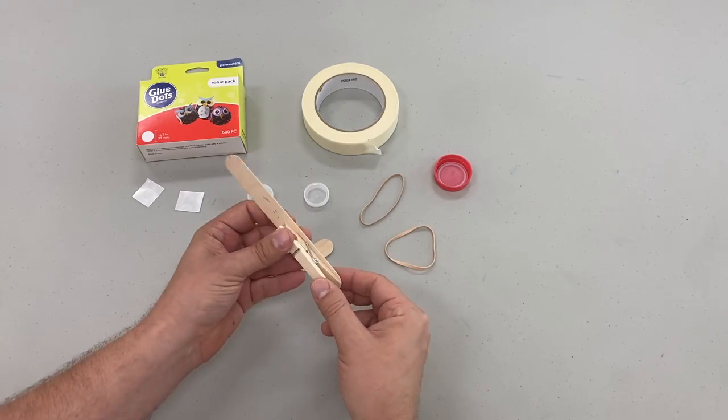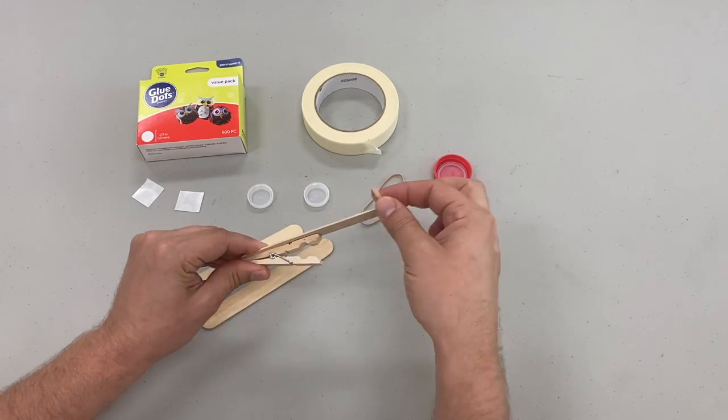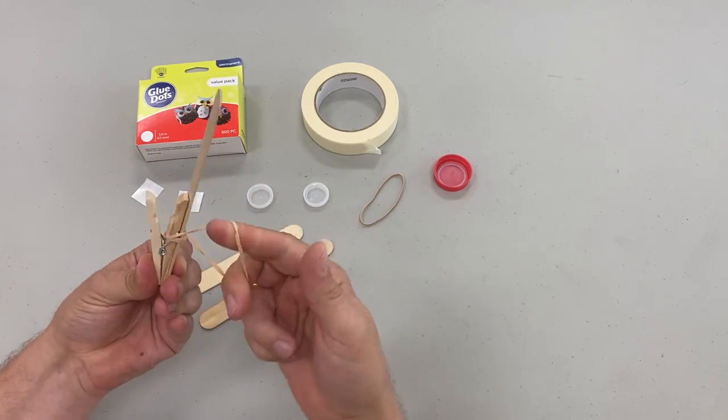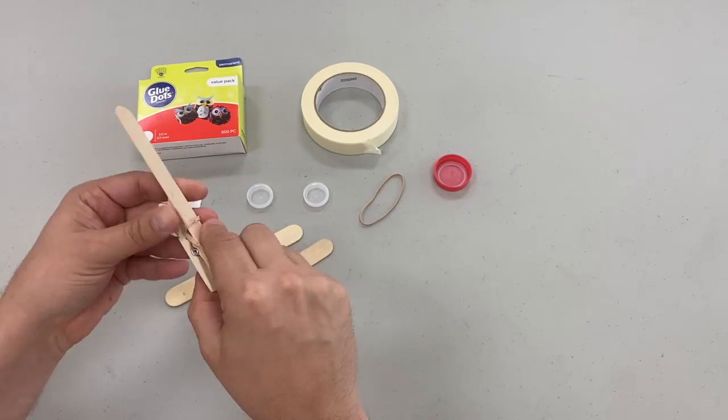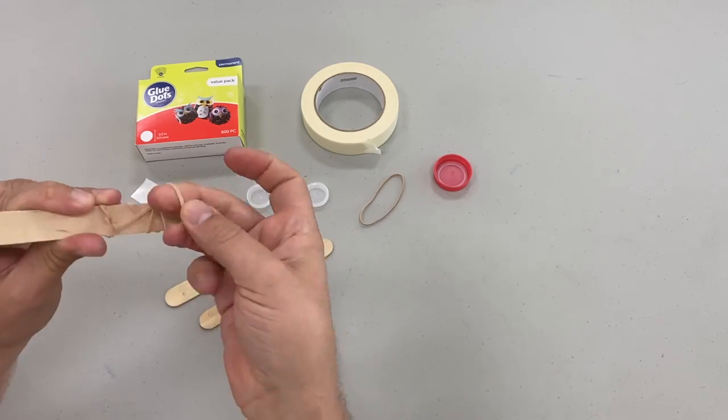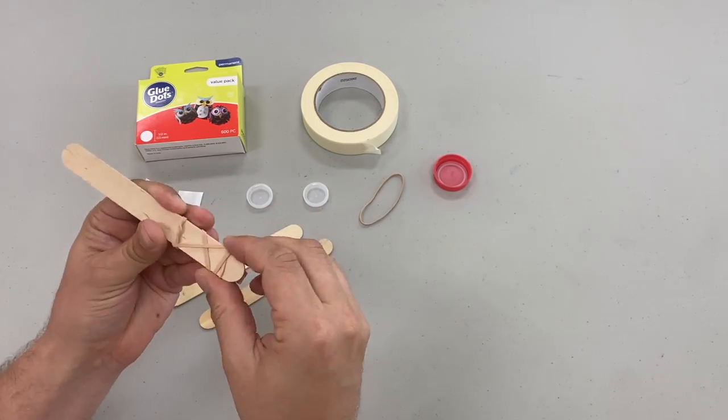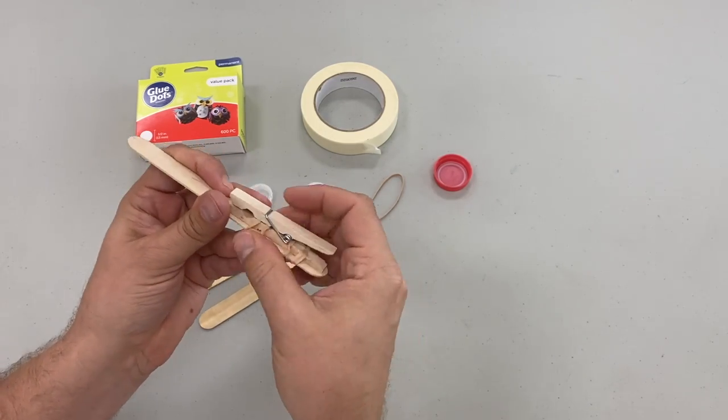The first step is to take your clothespin and attach it to one of your craft sticks. I like to open up my clothespin and loop it a couple times through the inside of the clothespin and then around the tail as well. This way it stays extra stable on the craft stick.